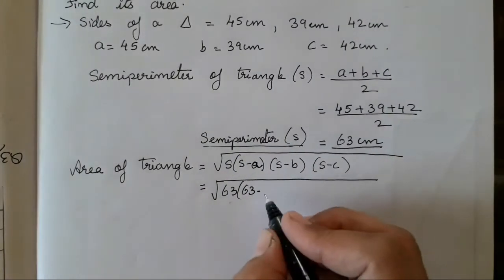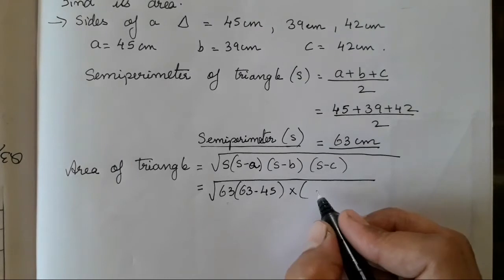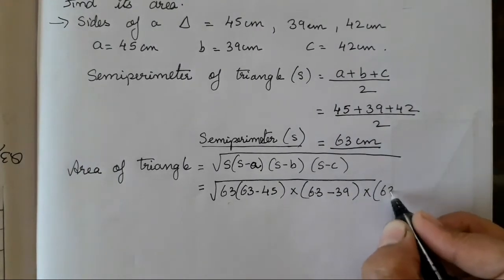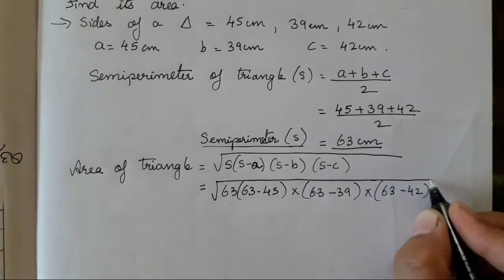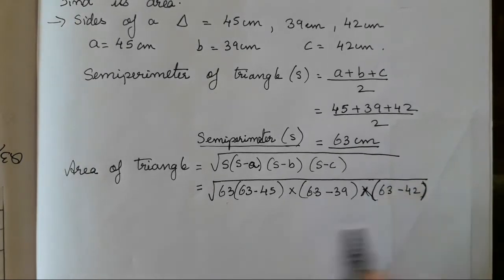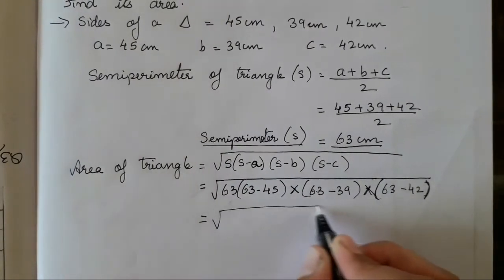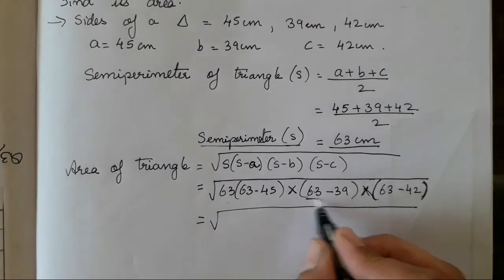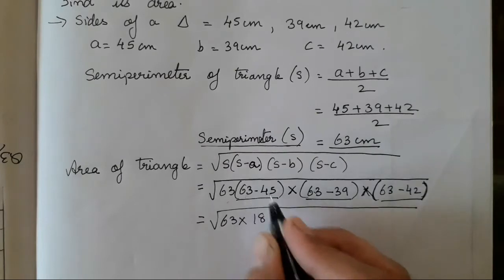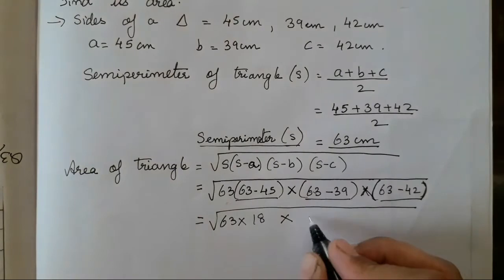So we substitute: √(63 × (63−45) × (63−39) × (63−42)). Remember, when we write brackets together it means multiplication. Now we solve the small brackets first — that is subtraction: 63 × 18 × 24 × 21.